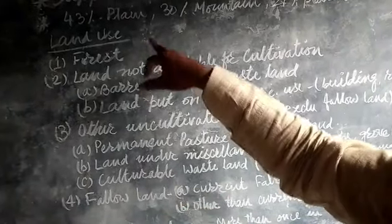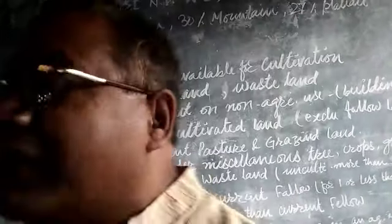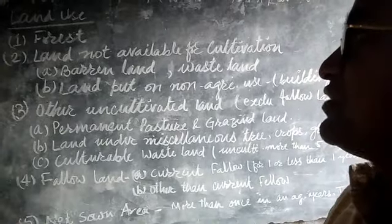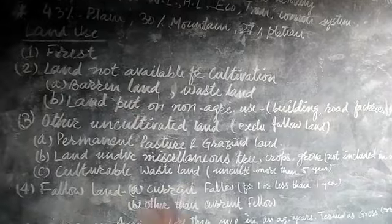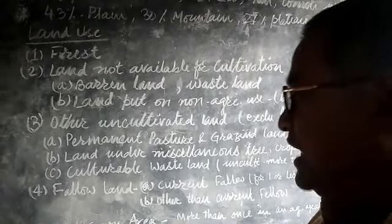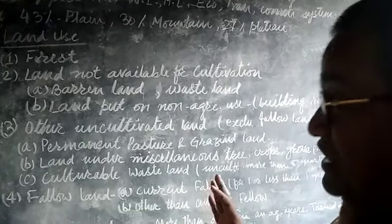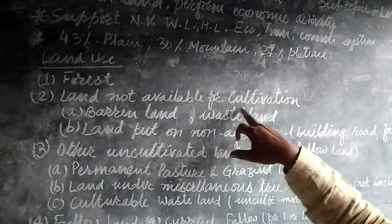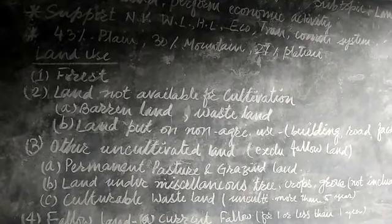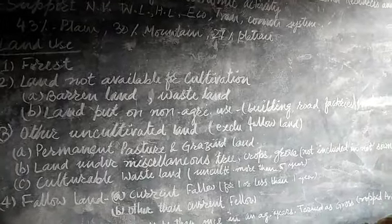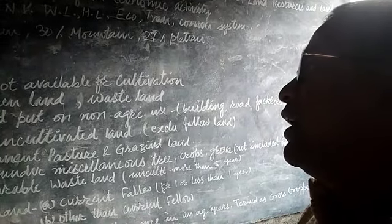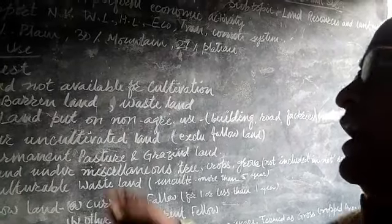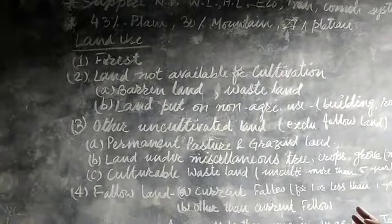Now, looking at the land use pattern in our country — the different purposes for which land resources are used — first is forest land. Second is land not available for cultivation, meaning many parts where the fertility of land is not suitable for agriculture. Land where fertility is very low and gravel is found is termed barren or wasteland, which is not suitable for agriculture.